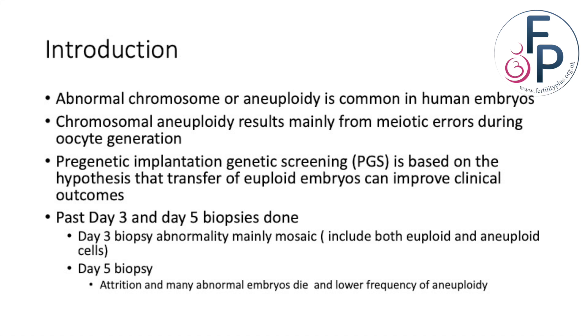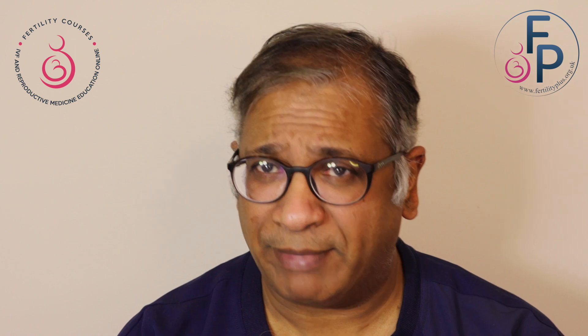What we know is that aneuploidy is common in human embryos — in fact, as humans we produce a huge number of abnormal embryos. Fortunately, very few of them will implant, and thus the chance of having an abnormal baby is extremely low. Many chromosomal abnormalities result mainly from meiotic errors during oocyte generation. Pre-implantation genetic screening, called PGS or now PGTA, is based on the hypothesis that if you transfer euploid embryos, you can improve clinical outcomes.